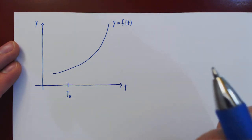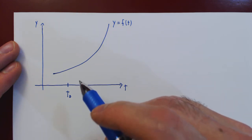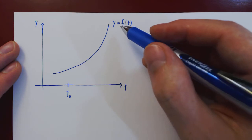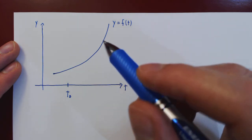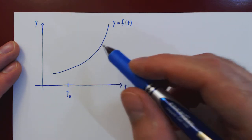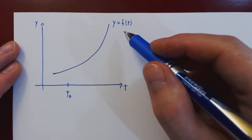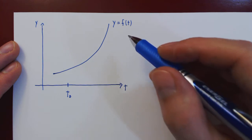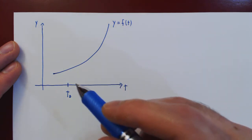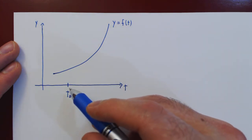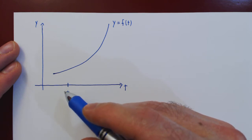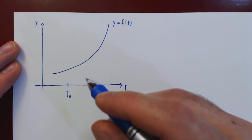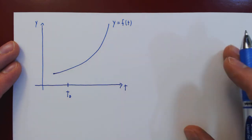Assume we are considering the position of an object moving in a straight line as a function of time, where the position is given by the function f of t. We are now interested in not finding the average velocity of the object over some time interval, but instead finding the exact velocity of the object at a specific point in time, say t0. This type of velocity is called the instantaneous velocity of the object.